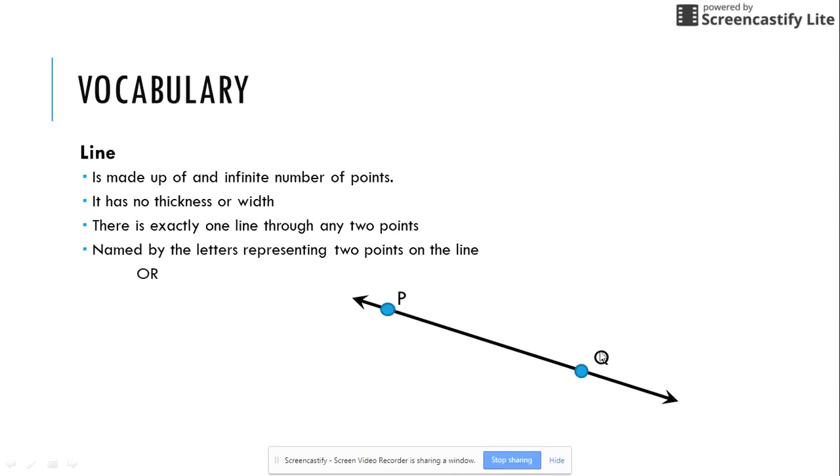Lines are named by the letters that represent those two points. So this would be line PQ or by a lowercase script letter or cursive letter that is at the end of a line. In this case we can name this line as line M or line PQ which tells us we are starting at P and moving to Q. And please notice that there is a line with an arrow on either end to show that it continues on. Or line QP with a line above it with an arrow. When I use a lowercase script letter I do not need to put a segment. What I would need to add is the word line.